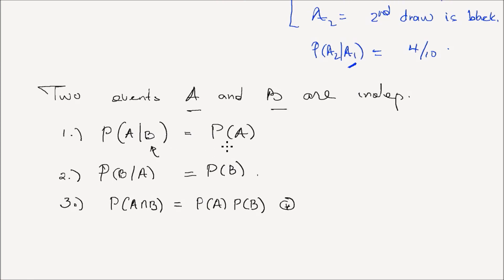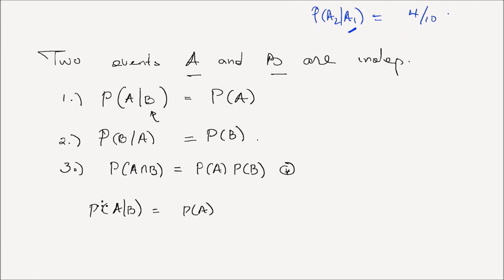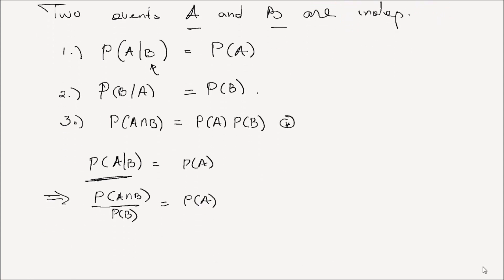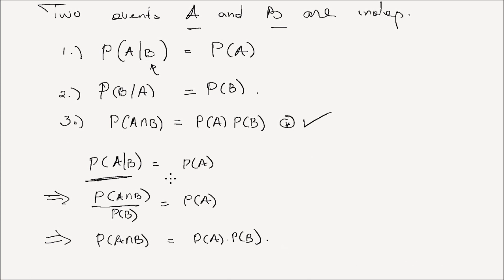You can take any of these first two expressions — let's take the first one. The probability of A given B is equal to the probability of A. But by definition of conditional probability, the probability of A given B is equal to the probability of A intersection B divided by the probability of B, and we're claiming that it's equal to the probability of A. If you rewrite this, you get the probability of A intersection B is equal to the probability of A times the probability of B, which is our third condition. So if you can show one of those three conditions are satisfied, then you have two independent events.